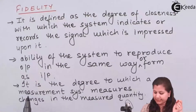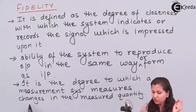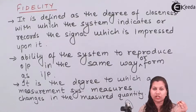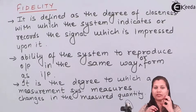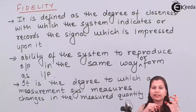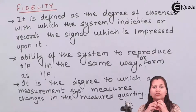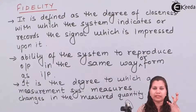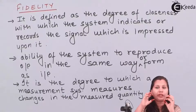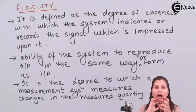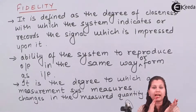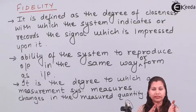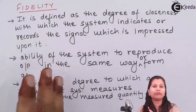Fidelity is the degree to which the measurement system measures changes in the measured quantity. For example, if we are measuring a length of 12 cm, the output should also be 12 cm. When we change the input from 12 cm to 13 cm, the output should also change to 13 cm. How closely the instrument measures changes in the input and reproduces those changes in the output is called fidelity. Since the input is changing with time and the output also changes with time, this is a dynamic characteristic.